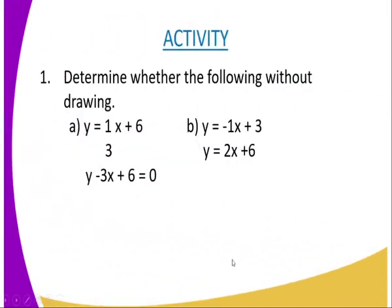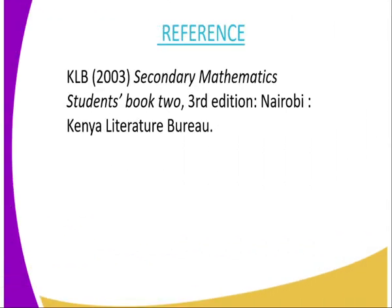We go to today's activity. You are supposed to do this question: determine whether the following equations give perpendicular lines or not. Question one: line one is y equals one-third x plus 6, and line two is y minus 3x plus 6 equals 0. Question two: line one is y equals negative x plus 3, and line two is y equals 2x plus 6. For reference, you can refer to Secondary Mathematics student book two, published by Kenya.